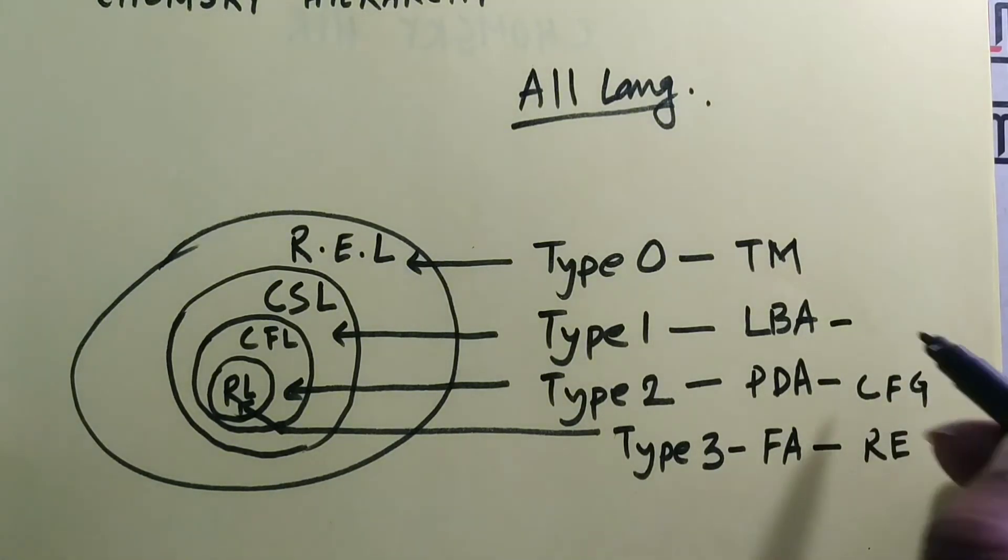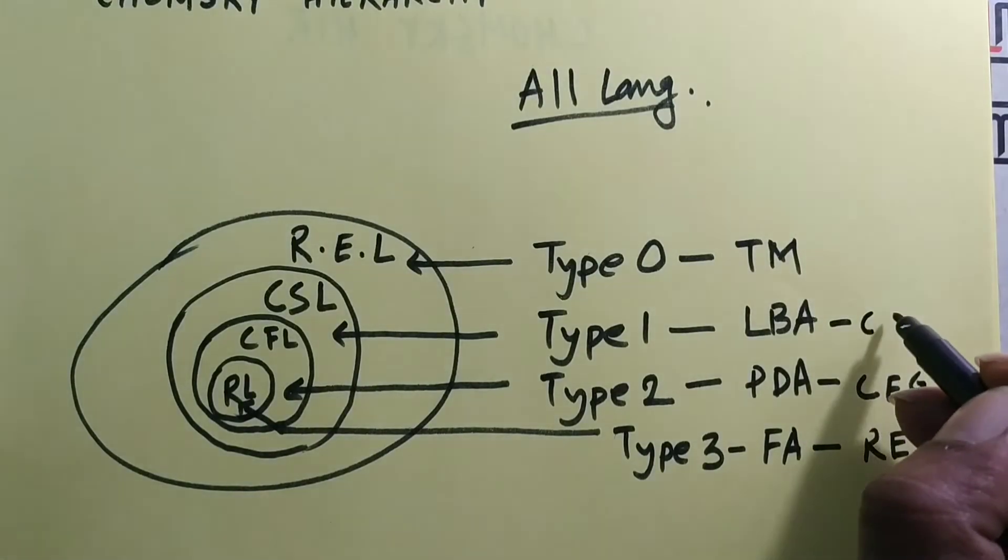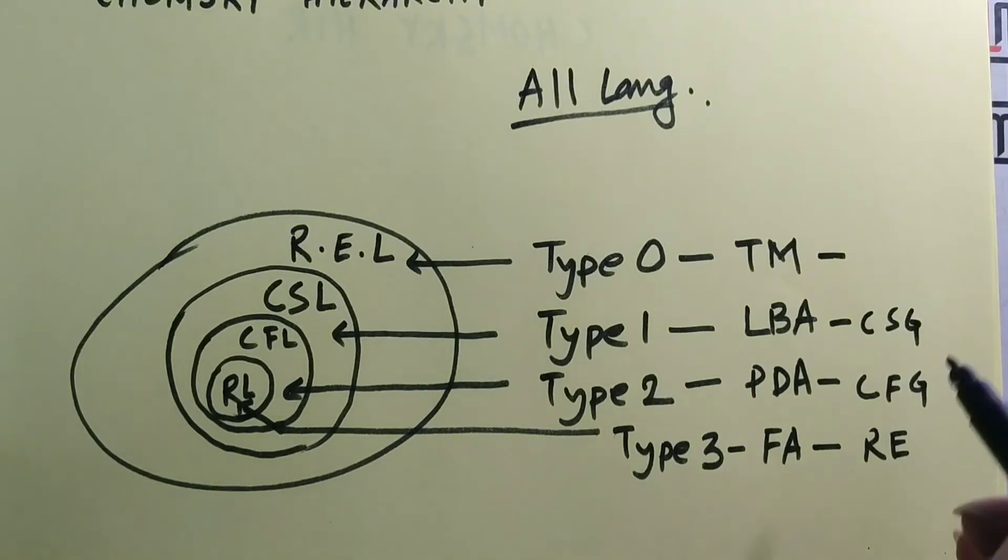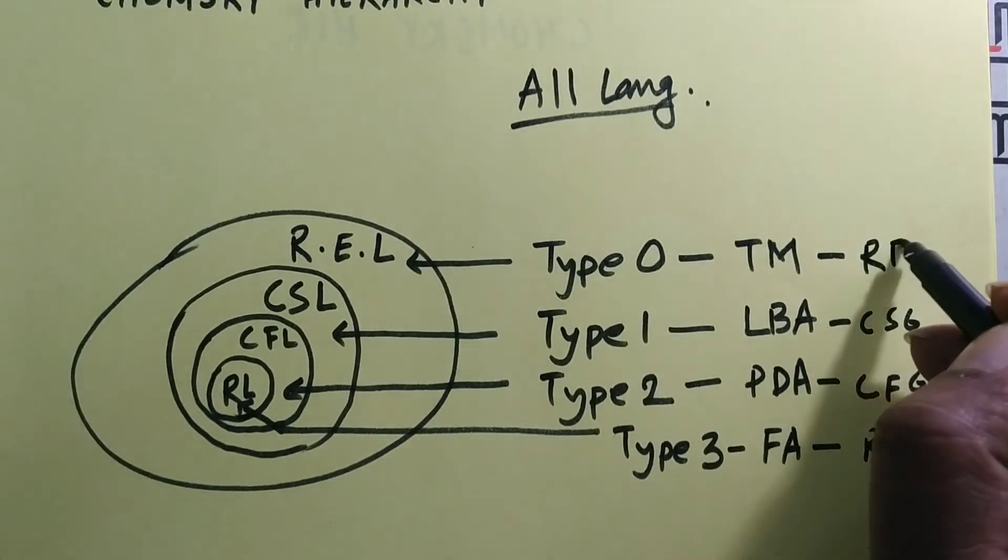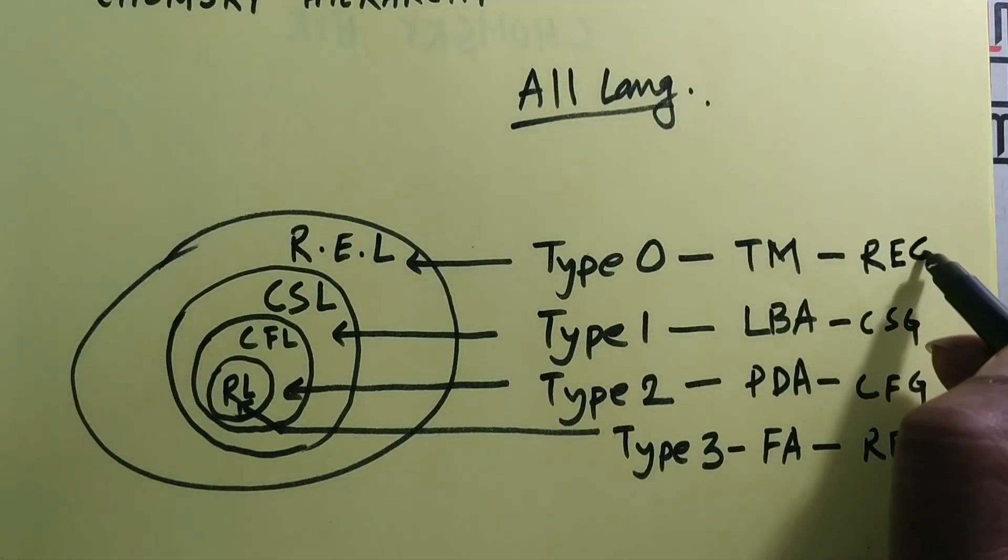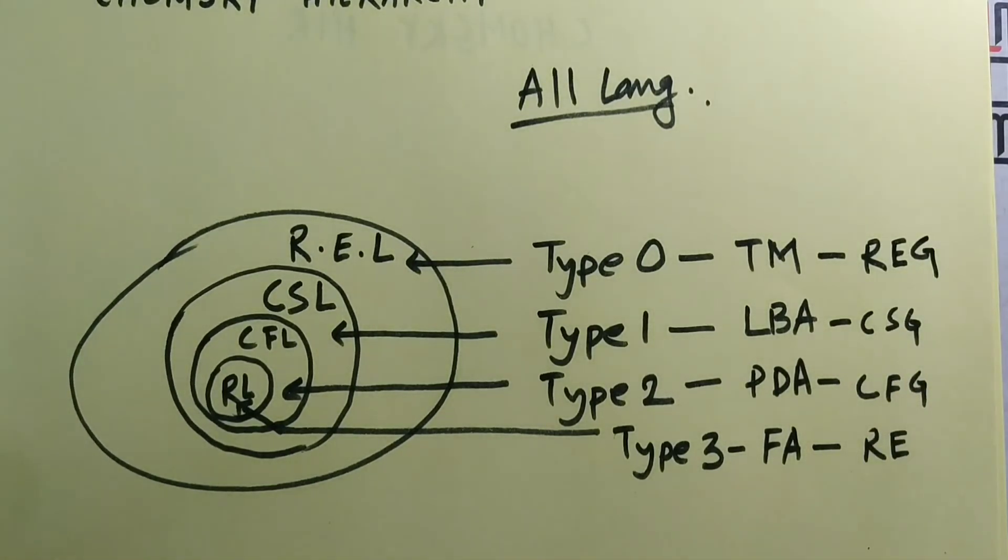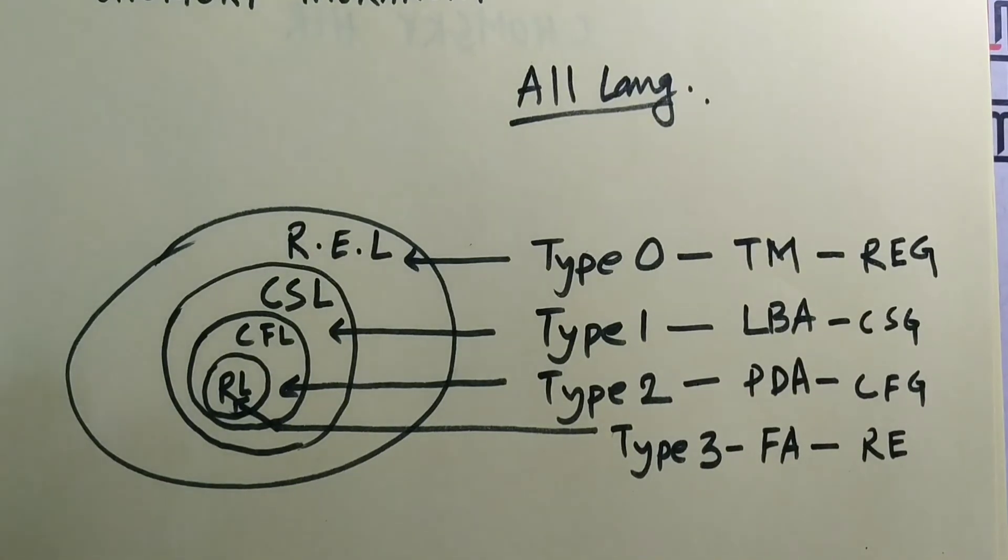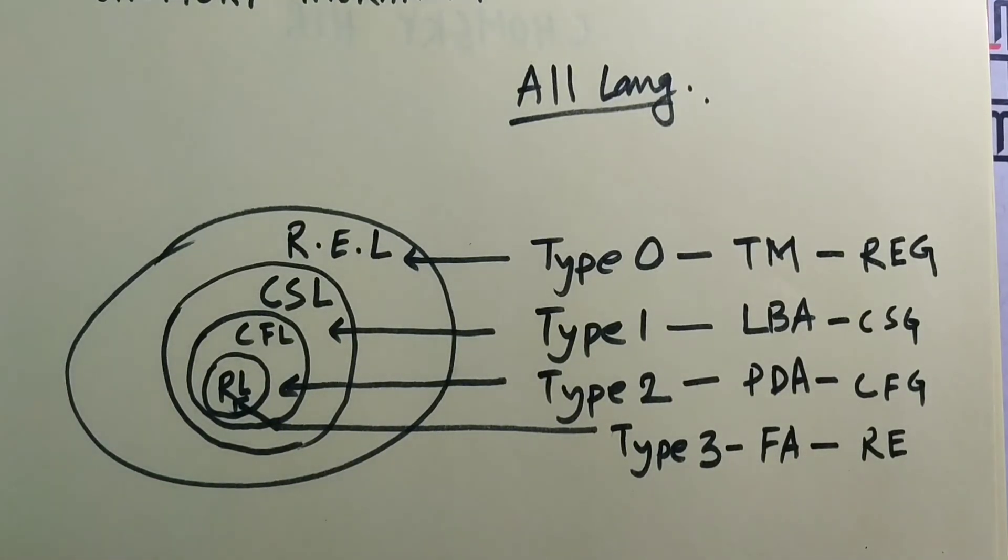Type 1 languages are represented by context sensitive grammar and Type 0 languages are represented by recursively enumerable grammars. So this is the overall hierarchy of languages given by Chomsky.